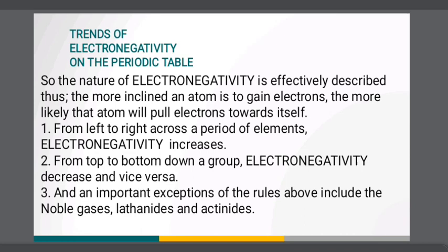From the top to bottom down a group, electronegativity decreases and vice versa. This is because the atomic number increases down a group and thus there is an increased distance between the valence electron and nucleus, or a greater atomic radius.